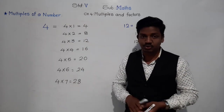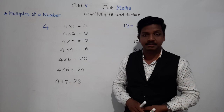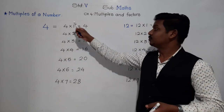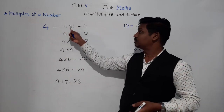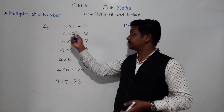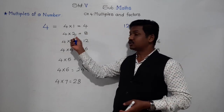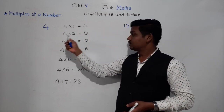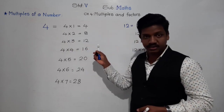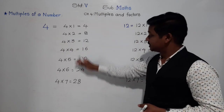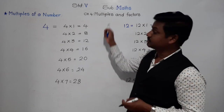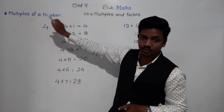When we say the table of 4: 4×1=4, 4×2=8, 4×3=12, and so on — these numbers are the multiples of 4. Similarly for 12: 12×1=12, 12×2=24, 12×3=36, 12×4=48, 12×5=60, 12×6=72, 12×7=84. These are the multiples — they come in the table of the given number.